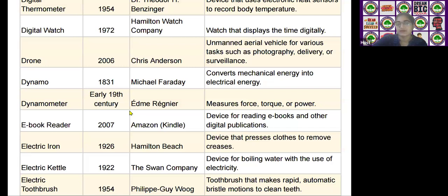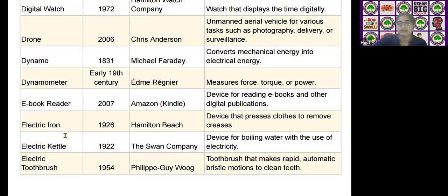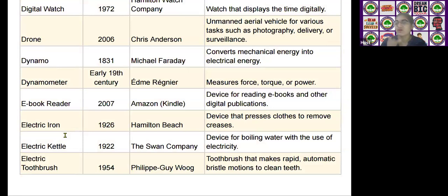The next scientific device is the e-book reader, invented by Amazon Kindle in the year 2007. It is used as a device for reading e-books and other digital publications.